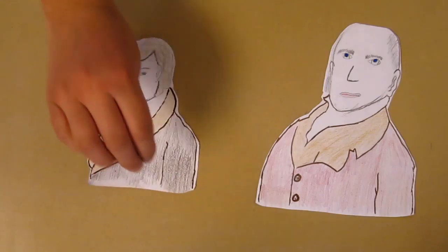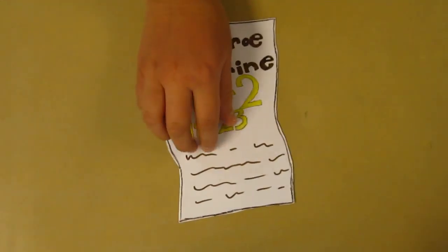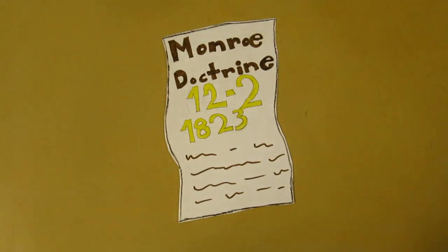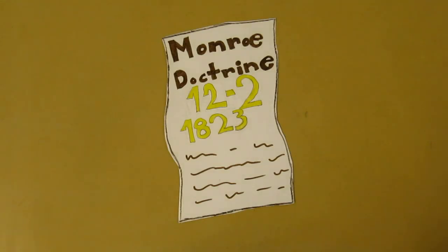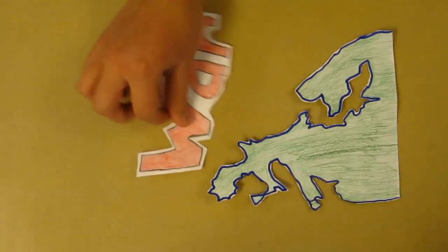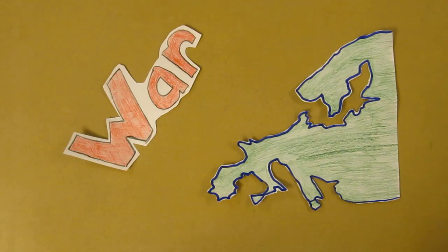Secretary of State Adams and President Monroe created the Monroe Doctrine to keep Europe from resettling in Latin America. The Monroe Doctrine was delivered on December 2, 1823. It stated that if any country interfered with any Latin American country, the U.S. would see it as a threat to security.